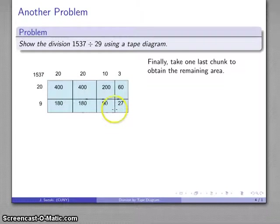So now my area of the figure, a couple of 400, 260, all of these added together should add up to 1537. And that tells me that the rectangle with area 1537 is a 29 by 20, 40, 50, 53, so the quotient is going to be 53.